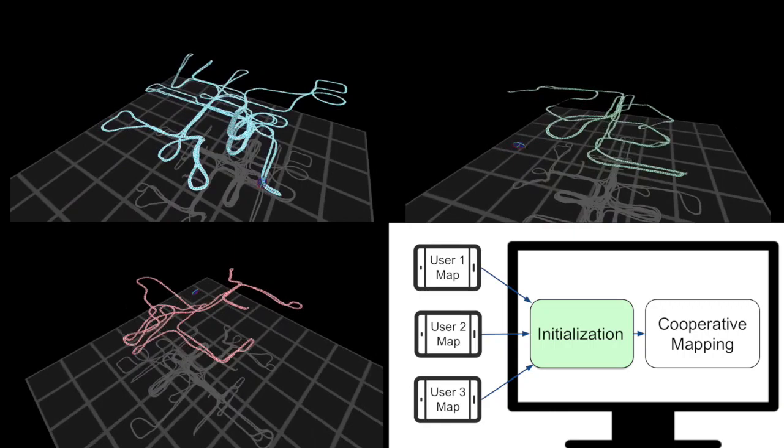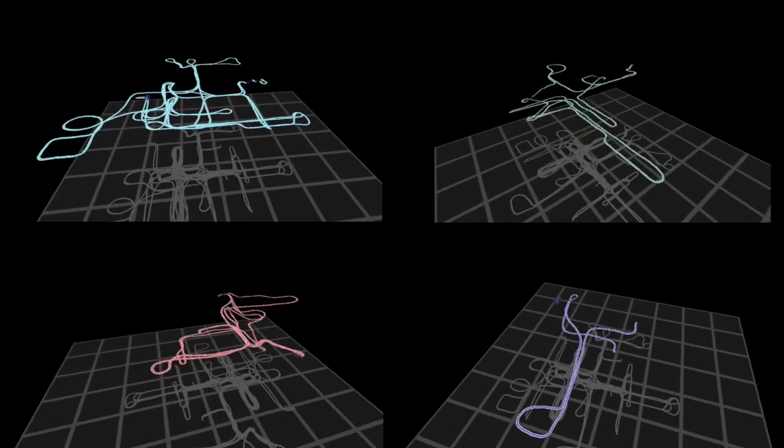Once these individual results are computed, they are collected on a central server where the relative positions and orientations of the users are initialized from observations to common landmarks.